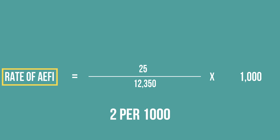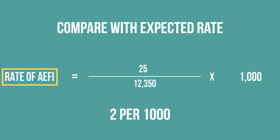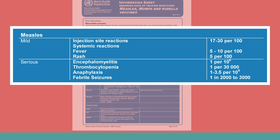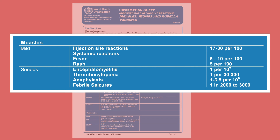Once you have calculated your AEFI rate, you can compare that number with the expected rate. If your rate is higher, there is a potential issue and further investigation is needed. You can find the expected rates for each type of AEFI for a given vaccine in WHO information sheets. This WHO information sheet for MMR shows the expected rate for febrile seizures is one case per 2,000 to 3,000 doses. Since we are considering rates per 1,000, you could convert this to a rate of 0.5 or 0.3 cases per 1,000.